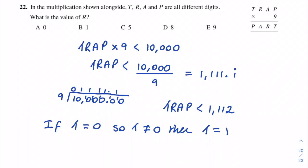With T equal to 1, R can only be zero or one. But all digits are different and T already takes the digit 1, so R can only equal zero. Therefore, when T is 1, R equals 0, which is answer A.